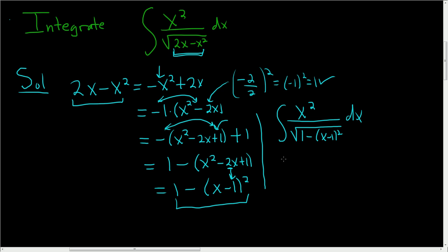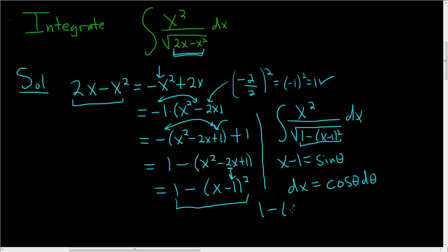Now we're going to make a substitution. We let x minus 1 equal sine of theta. Then dx — since the derivative of sine is cosine — is cosine theta d theta. Something neat happens: under the square root we have 1 minus (x minus 1) squared, which becomes 1 minus sine squared. And 1 minus sine squared is cosine squared.